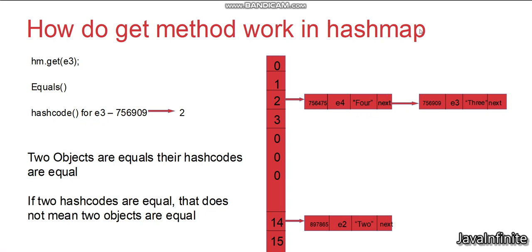Now let's see how the get method works in HashMap. We are trying to retrieve employee object e3. HashMap first calculates the hash code for key e3, which is 756909, then identifies that the record should be in bucket 2. Since bucket 2 has more than one record, HashMap first compares hash codes: 756909 vs 756475 — not matching — so it follows the next node pointer to the next record. There, 756909 matches 756909, and then it compares the key: e3.equals(e3) returns true, so it retrieves and returns that record.